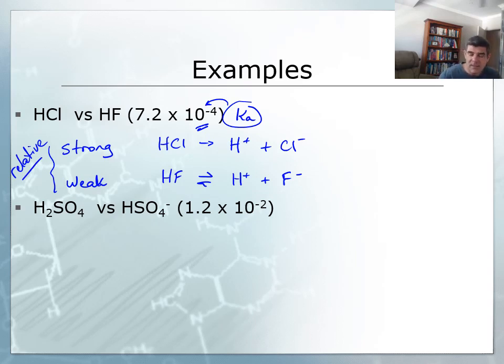What about something though like sulfuric acid? Now sulfuric acid is another acid that we know is a very strong acid, but when it ionizes, it ionizes to H+ and HSO4-. So this is what we call the first ionization.